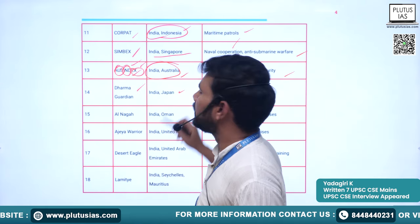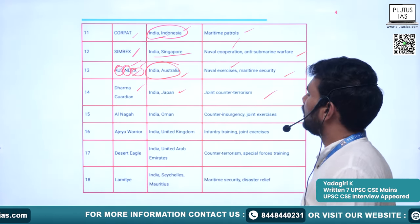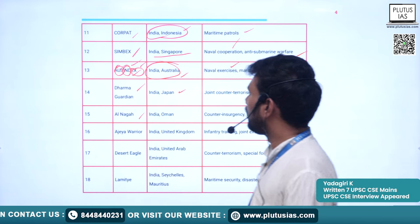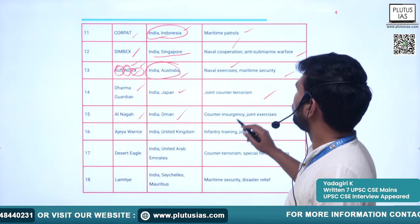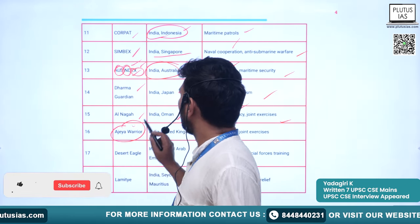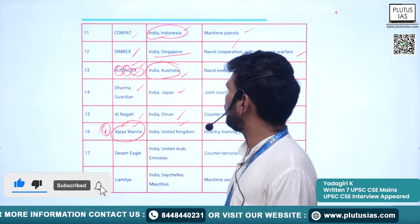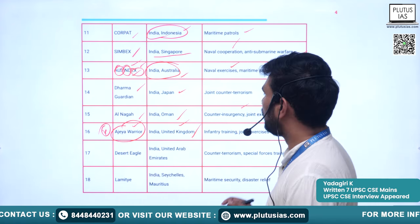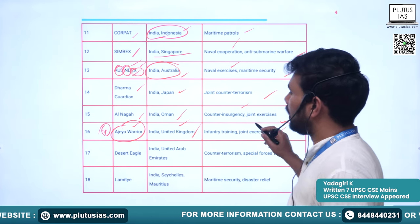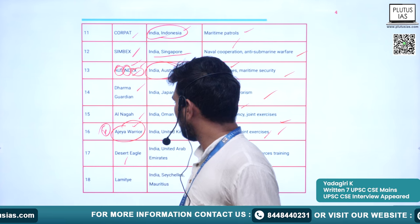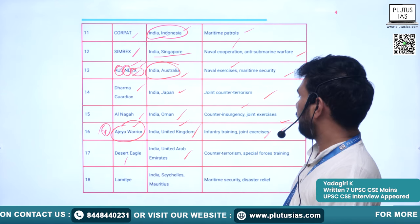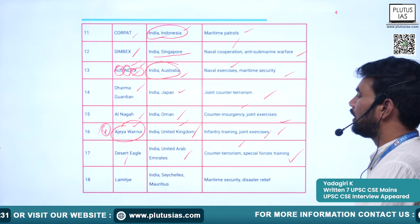Dharma Guardian is between India and Japan, with a thematic area of joint counterterrorism. Al Nagah is between India and Oman, covering counterinsurgency and joint exercises. Ajay Warrior is between India and the United Kingdom — thematic areas are infantry training and other joint exercises. Desert Eagle is between India and the United Arab Emirates, with thematic areas of counterterrorism and special forces training.